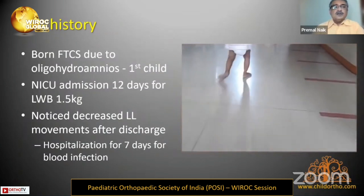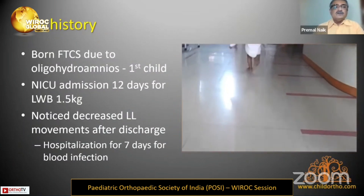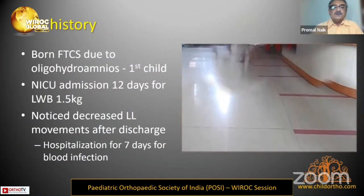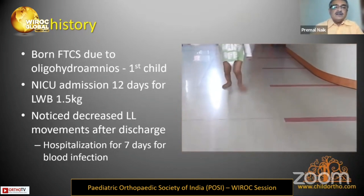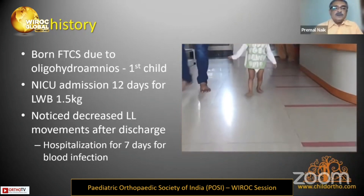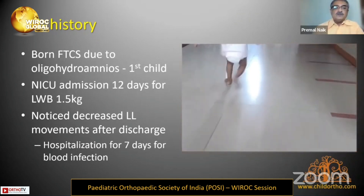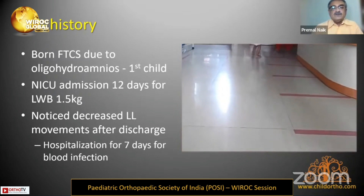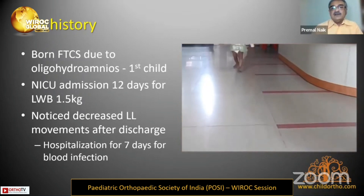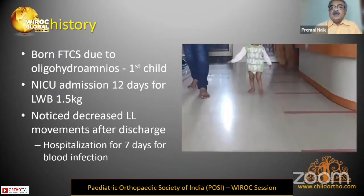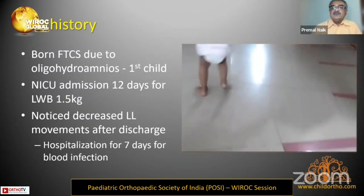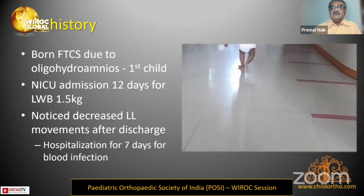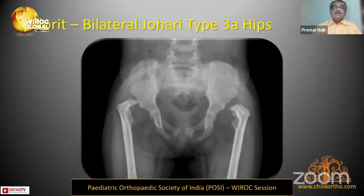Looking at this girl, born full-term via cesarean section with NICU admission for 12 days. Decreased lower limb movements were noticed after discharge; she went back to hospital, had blood infection diagnosed, and was treated with IV antibiotics. She presented to me at age one and a half years when she started walking with a bilateral limp. The culprit was bilateral Jhori type 3A hips.